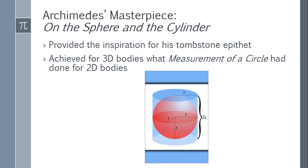And by the way, pi shows up again in the three-dimensional measurement of volume of a sphere. The formula for the volume of a sphere is four-thirds pi times the radius cubed. So the volume of that sphere is (4/3)πr³.